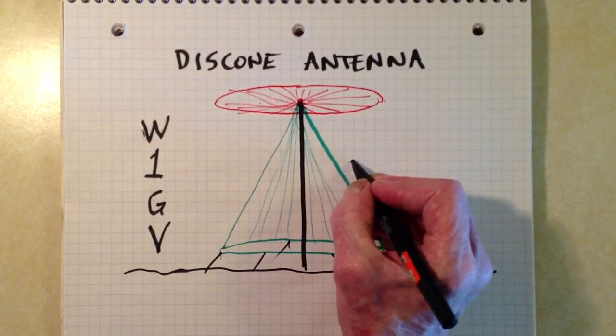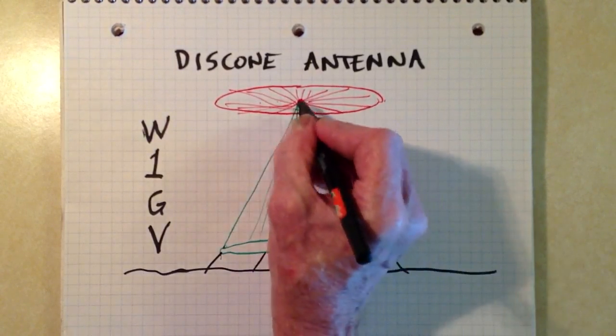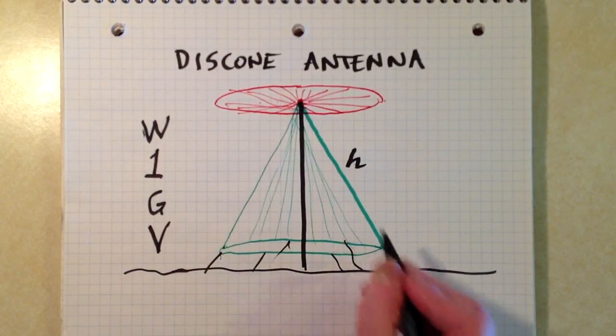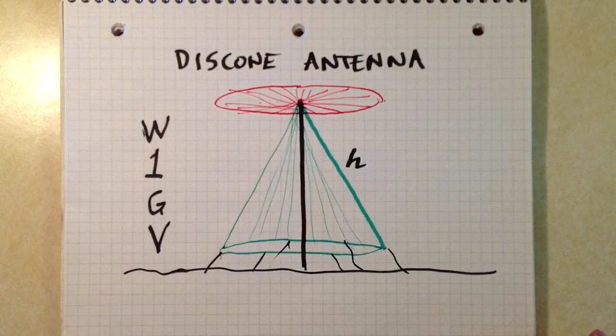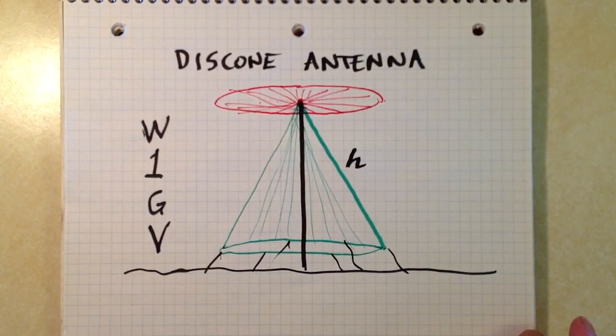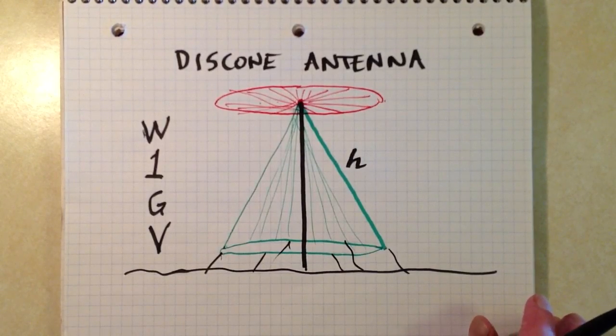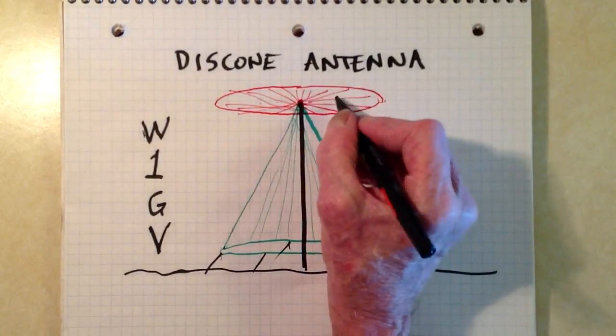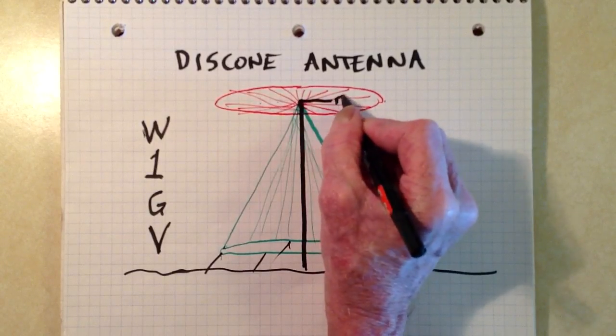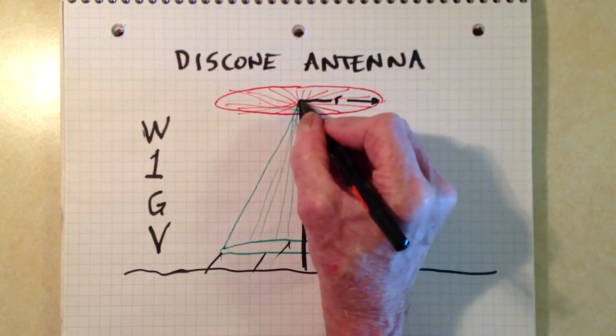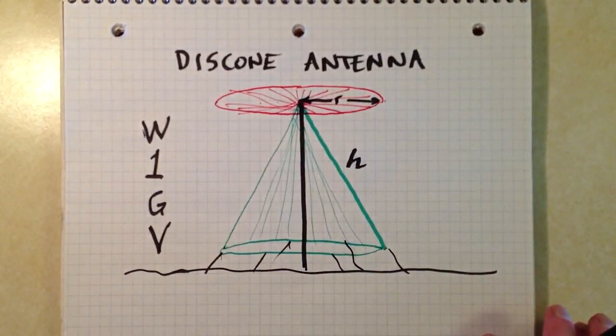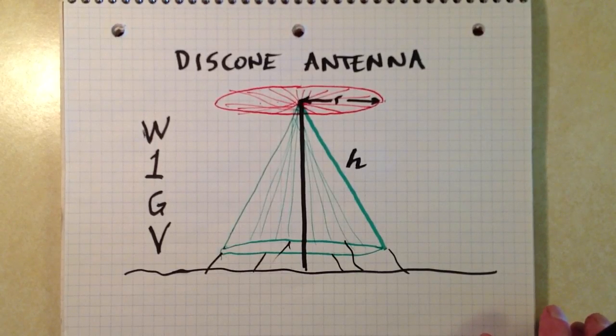The cone, generally speaking, should have a slant height, H, that's from the edge to the top, roughly equal to a quarter wavelength at the lowest frequency on which you want to operate the antenna. The radius of the disc is somewhat less. The exact parameters depend upon the band that you want to use, the lowest frequency band.